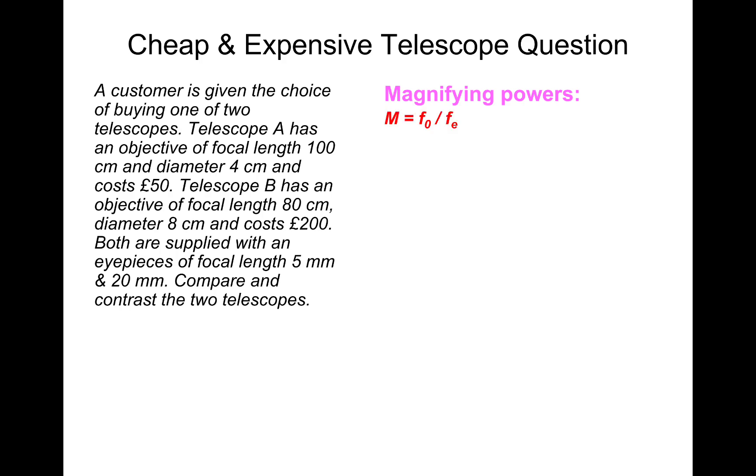Magnifying powers - that's going to be FO over FE. The maximum power will be available with the 5 millimeter eyepiece. That's because the magnification is inversely proportional to FE. So if you reduce FE smaller, you'll get higher magnification. Telescope A is FO over FE: 100 centimeters divided by 5 millimeters. You have to change the units to make them comparable and that will give you a magnification of 200 times.